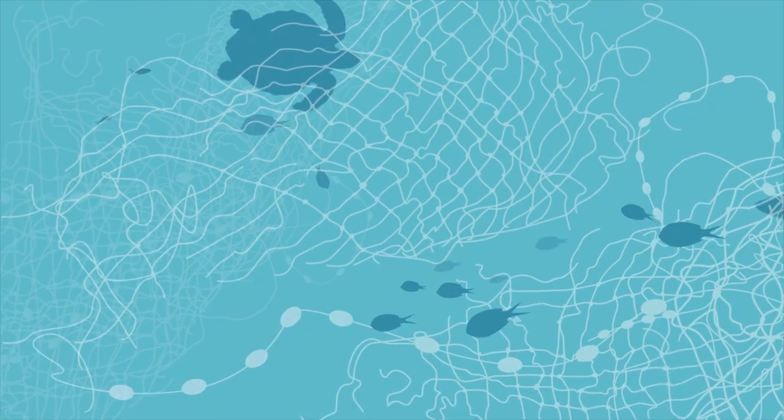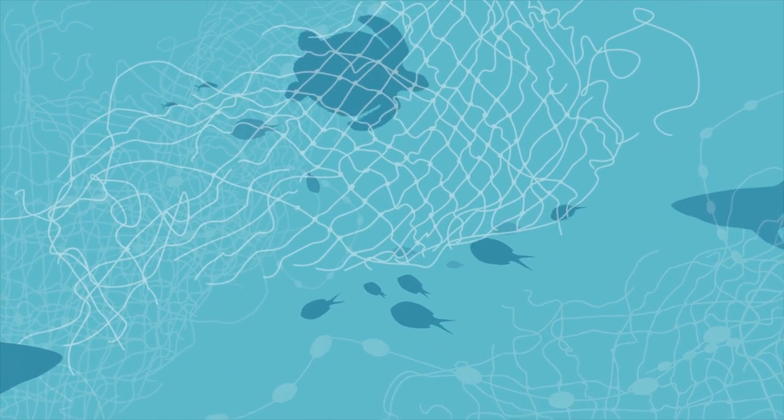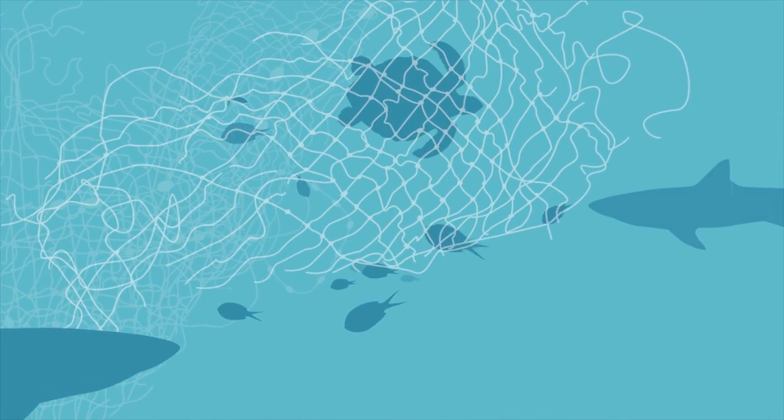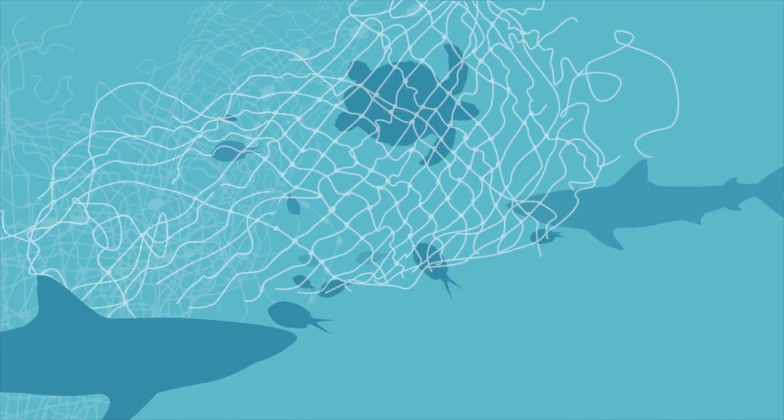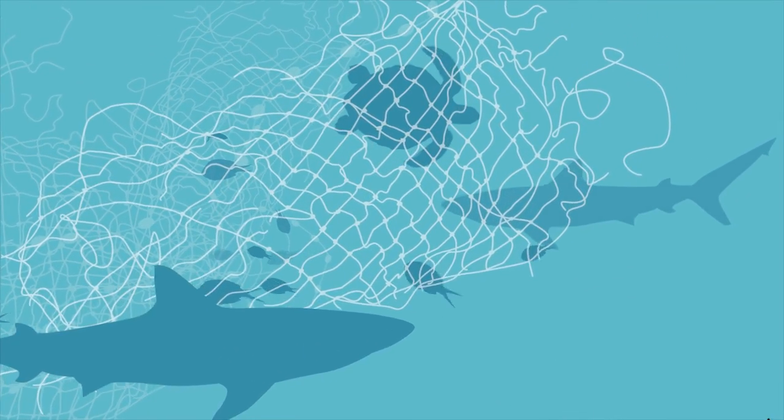Entangled fish act as bait attracting larger predators such as turtles, sharks, whales, and dolphins that may themselves become entangled. Most entanglements go unnoticed.